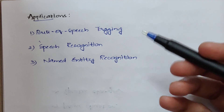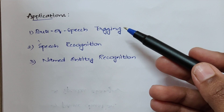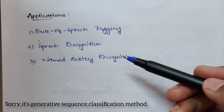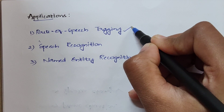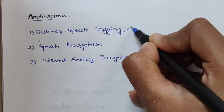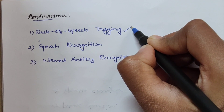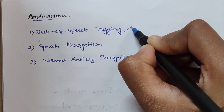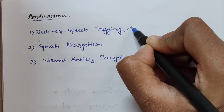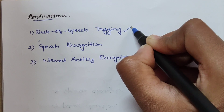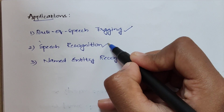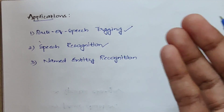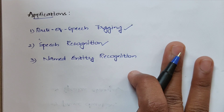Now let's see the applications of the generative sequence classification method and discriminative local classification method. The first application is parts of speech tagging — whenever you give a sentence to the system and ask it to predict the parts of that sequence, it gives you the parts of speech. The second application is speech recognition; a common example is YouTube, where subtitles are generated automatically.